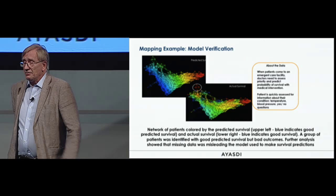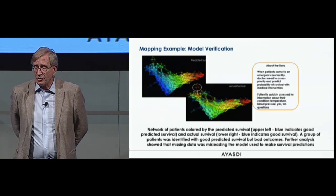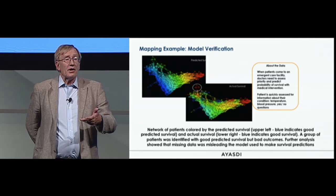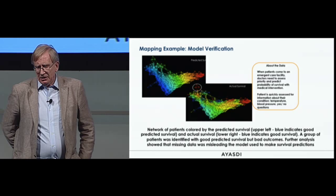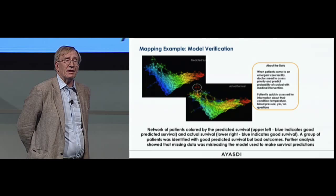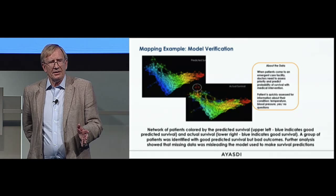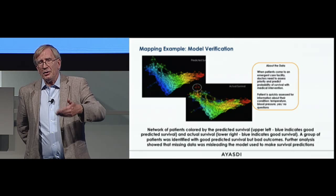More operationally: if you're interested in understanding how a model is working, here's an example with intensive care unit data — questionnaires answered by ICU personnel. Collaborators built a predictor using genetic algorithms for survival. The upper left network is colored by the predictor, the lower right by ground truth. The predictor is doing something good, but there's also a red group in the upper left that was green under the predictor. Taking that group and finding the explanation reveals that some questionnaire questions about mood and energy were not filled out — allowing you to modify your model appropriately.